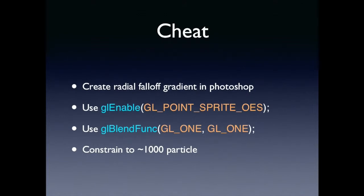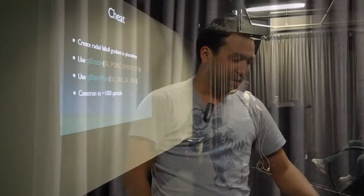So then I decided to cheat. I made a radial gradient in Photoshop that kind of replicated that fall off. Then by using GL point sprite, every vertex in the system was bound to that texture — wherever it saw that vertex, it would plot that texture. I changed it to GL blend function 1,1, which basically means add it together. So even if you knock back the alpha on the individual sprites, they would gradually add together, and that's what gives that nice additive light effect. I knocked it down to about 1,000 particles and ended up with about 30 frames a second.